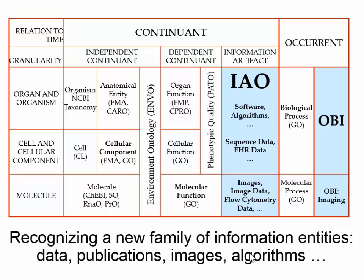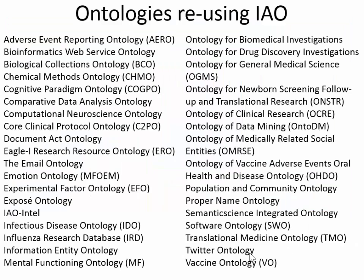BFO is the most reused ontology of all the ontologies we know about. IAO is almost certainly the second most reused ontology because it's very useful for all kinds of informatics-driven science, since all such science involves things like databases and publications. This is a list of some of the ontologies which build on IAO in the same way that the FMA, for instance, builds on BFO.